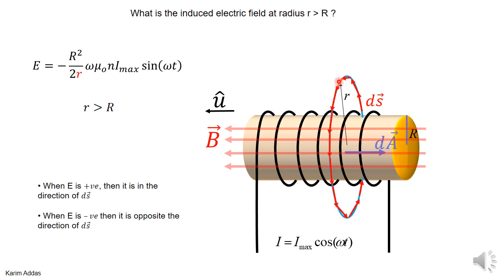So you can see this produces an oscillating electric field. This is actually the idea behind wireless charging of devices. If you put a wire in the place of this contour — you don't have to have a wire there, but if you do — the electric field in the wire will be oscillating with time, inducing an electric field around the wire without any physical contact between the base solenoid and the device you want to charge. This is the actual principle of wireless charging.